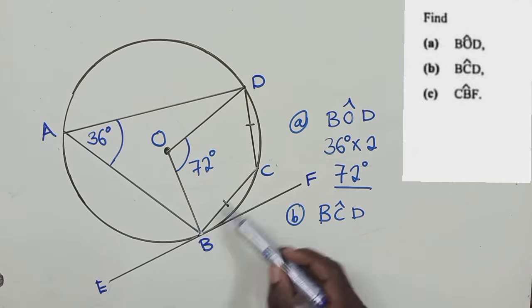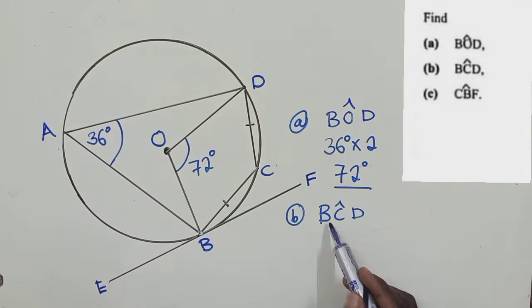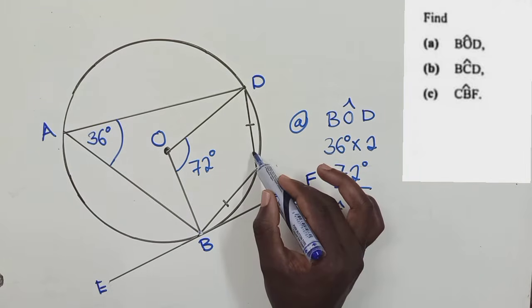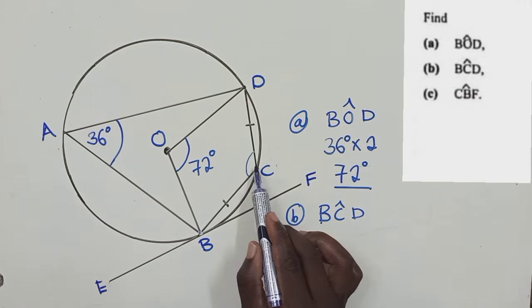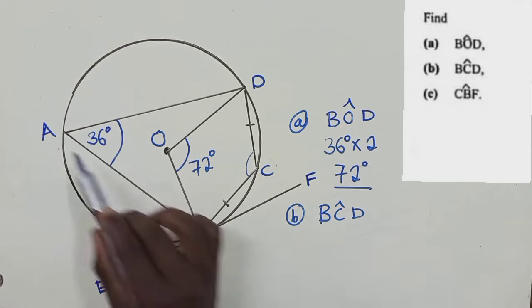They want us to find angle BCD. This is angle BCD. The angle we are looking for is right here. If you can see, C is opposite to A.